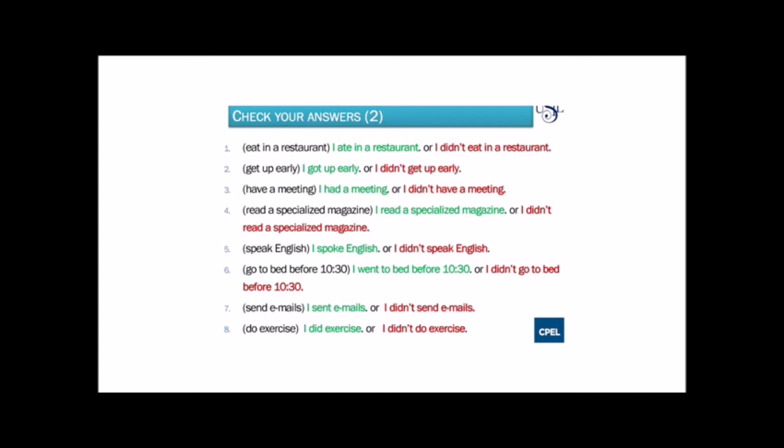Number two: get up early. The positive sentence is: I got up early. The negative sentence is: I didn't get up early. Number three: have a meeting. The positive sentence is: I had a meeting. The negative sentence is: I didn't have a meeting.